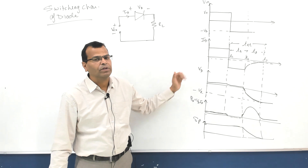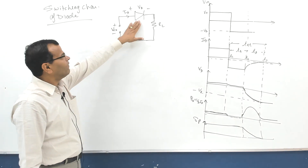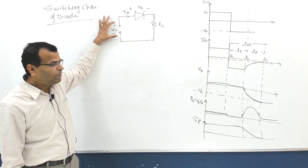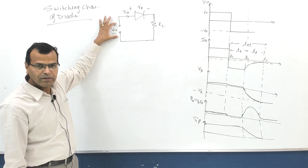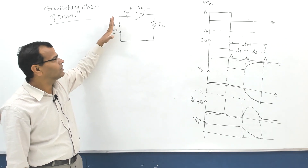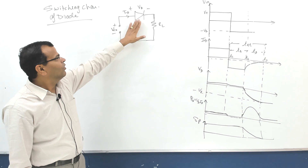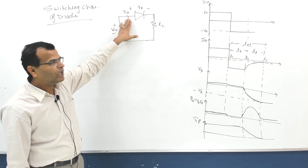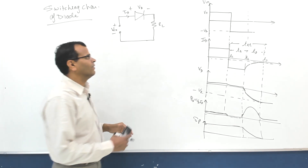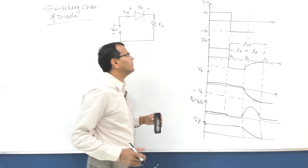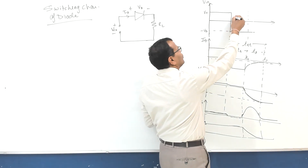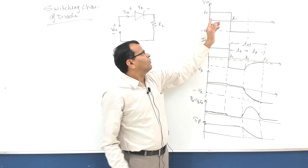Suppose I have a diode which is applied with some input voltage that is varying, but in this case it is changing only in two steps - maybe positive or negative. VD is voltage across the diode, ID is current through the diode, and it is feeding a load resistance RL. At a particular instance, say at T equal to T1, from 0 to T1 the diode is forward biased.